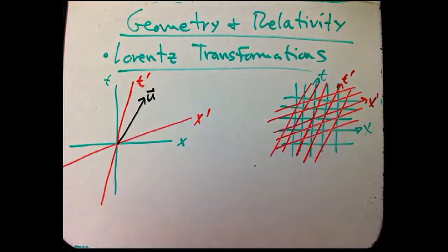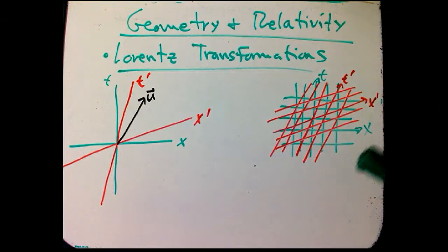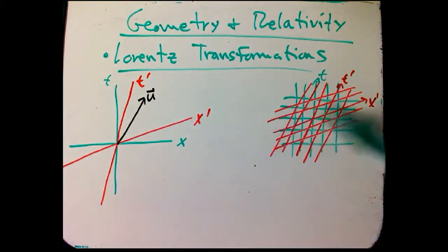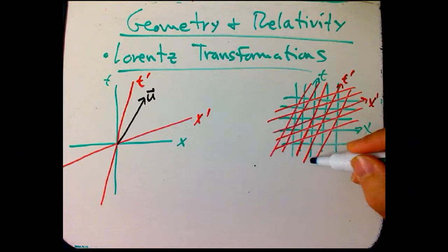Now it's time to look at the Lorentz transformations. So we have two coordinate systems. If you look over here, we have a coordinate system corresponding to one observer. Let's say that observer is A.